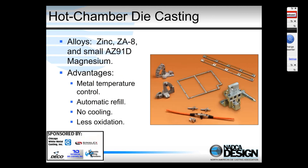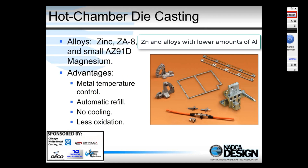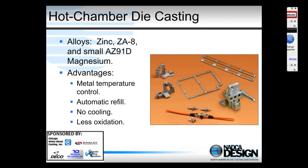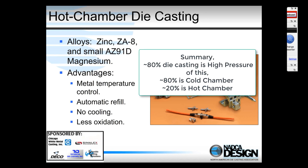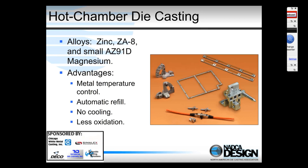The hot chamber process can produce most zinc alloys such as the ZAMAC alloys, as well as ZA8, which has only 8% aluminum — a low enough concentration that it doesn't cause dissolution of the ferrous gooseneck injection system. Smaller magnesium castings are also produced using the hot chamber process. The advantages include better metal temperature control since we're not pouring into a cold shot sleeve, and automatic refilling the moment the plunger moves back, resulting in less cooling and less oxidation of the metal.